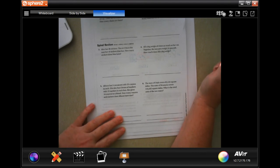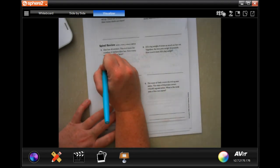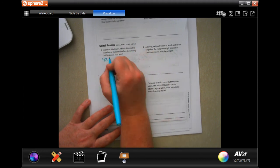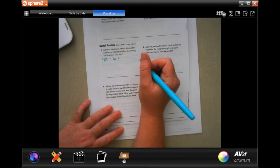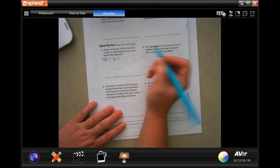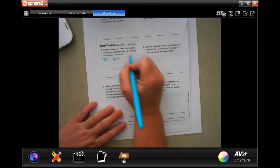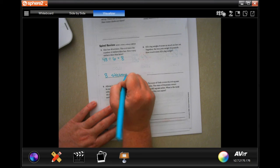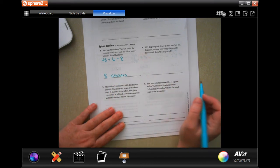So if Alex has 48 stickers, this is six times the number of stickers that Max has. How many stickers does Max have? Well, if Alex has 48, and that's six times more than what Max has, then I'm going to divide by six in order to get how many Max has. So I know that six times eight is 48. So eight. So eight stickers.